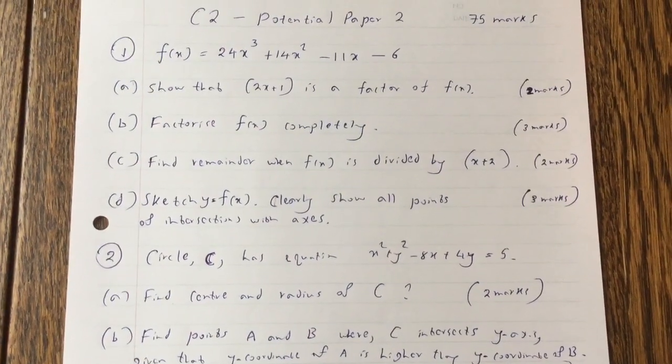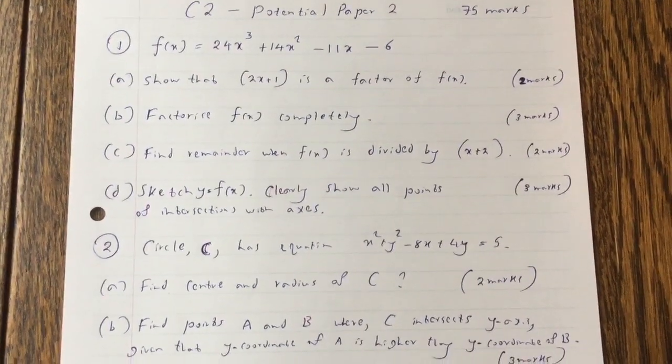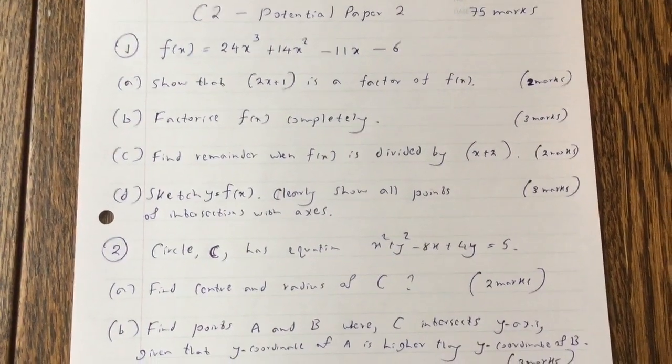Part C: Find remainder when f(x) is divided by (x+2). Part D: Sketch y equals f(x). Clearly show all points of intersection with axis.